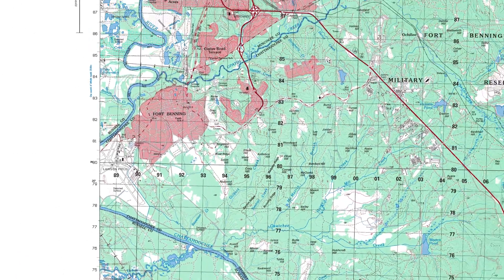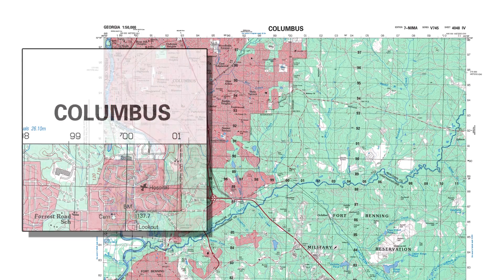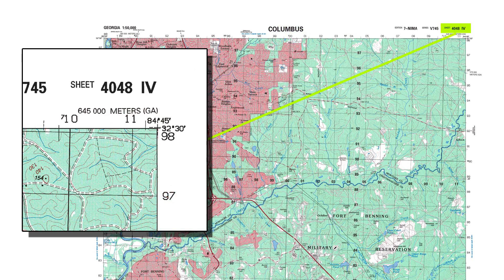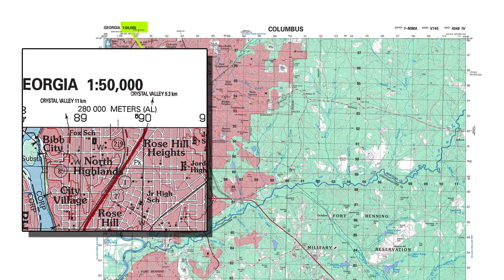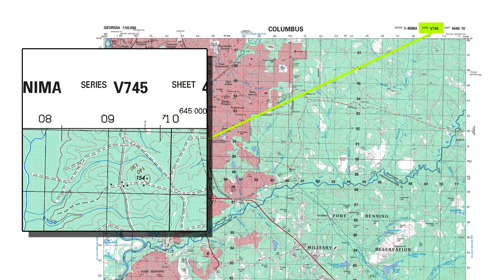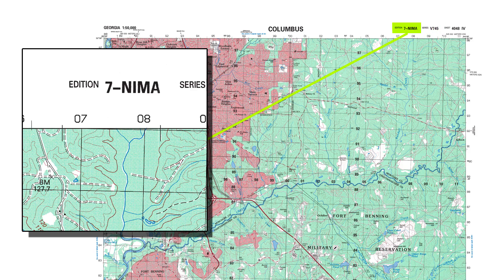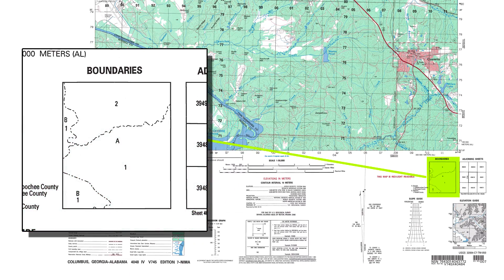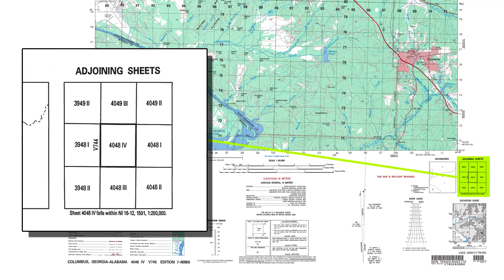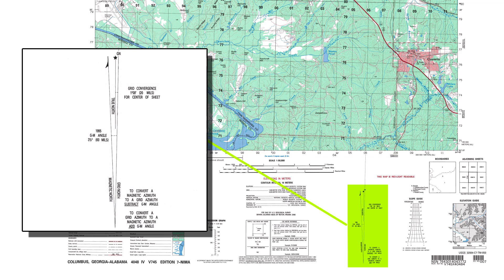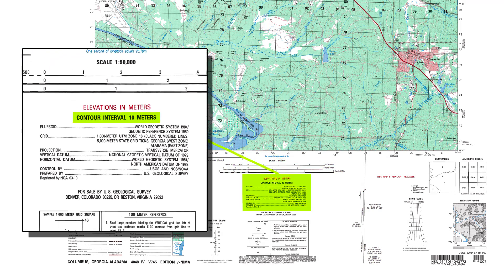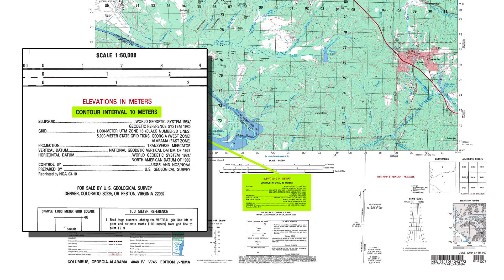Finally, identify the marginal information on a military map: sheet name, sheet number, series name, scale, series number, addition number, index to boundaries, adjoining sheets diagram, elevation guide, declination diagram, bar scales, contour interval note, spheroid note, grid note.